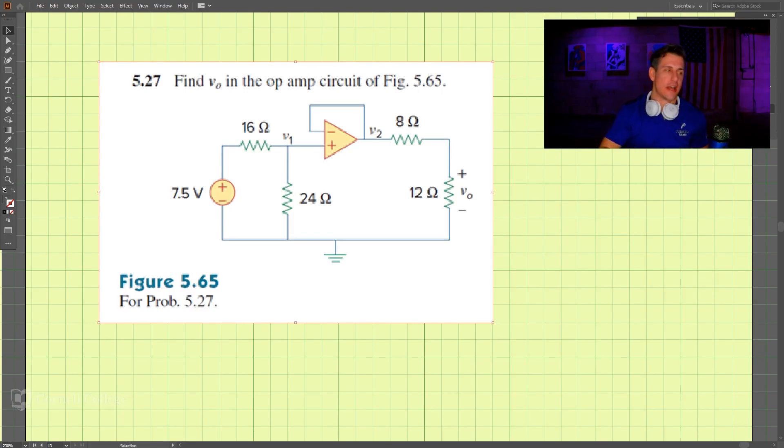This is problem 5.27, and we're looking for v naught here. It can be kind of confusing what's going on because we have this negative input here which is attached here.